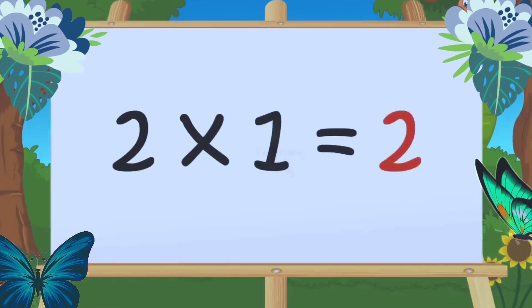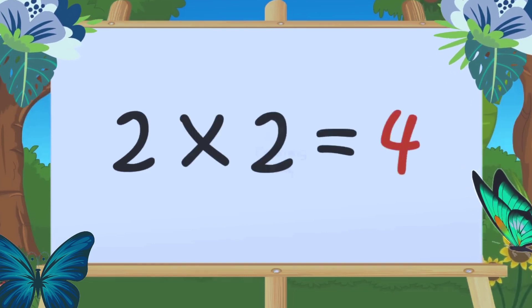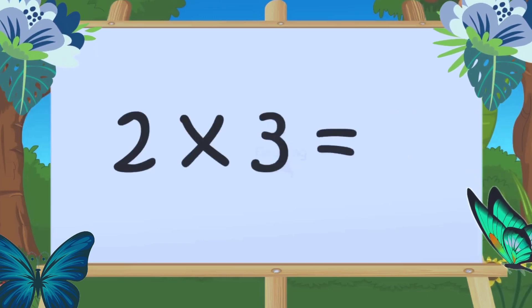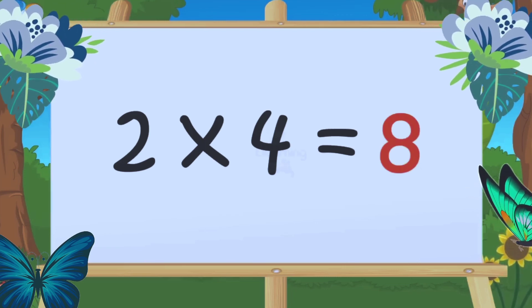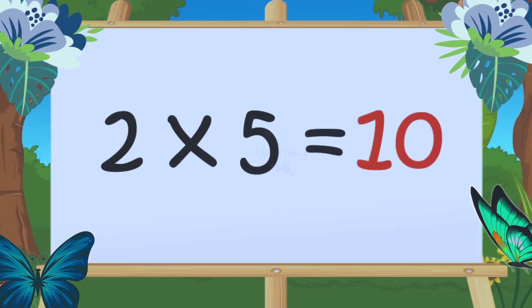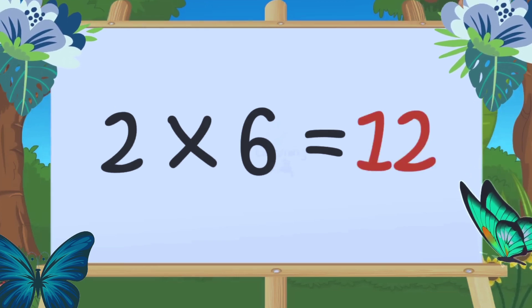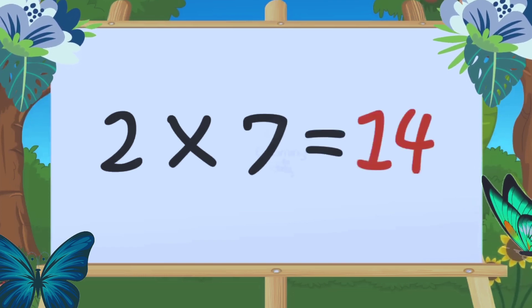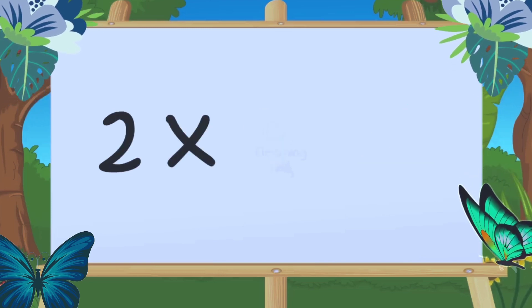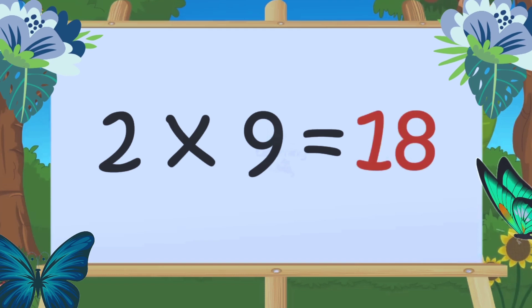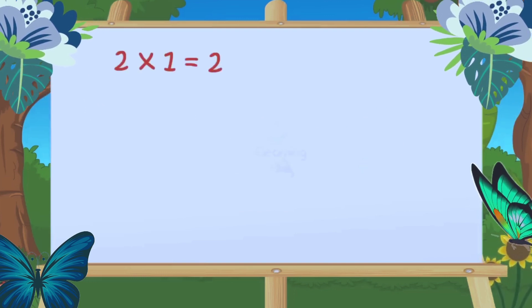Table of 2: 2 1s are 2, 2 2s are 4, 2 3s are 6, 2 4s are 8, 2 5s are 10, 2 6s are 12, 2 7s are 14, 2 8s are 16, 2 9s are 18, 2 10s are 20.